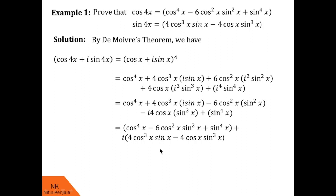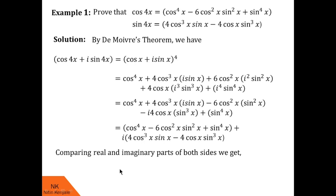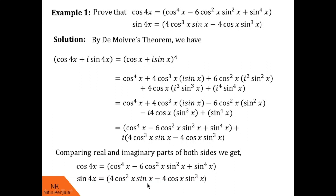Now in step 4, we simply compare both sides for the expansions of cos 4x and sin 4x. On the left hand side, the real part is cos 4x, and on the right hand side the real part is this expression. So cos 4x = cos⁴x − 6cos²x·sin²x + sin⁴x. Similarly, the imaginary part on the left is sin 4x, and on the right it is 4cos³x·sin x − 4cos x·sin³x. I hope you understood how to expand cos nx and sin nx using De Moivre's theorem and binomial expansion.